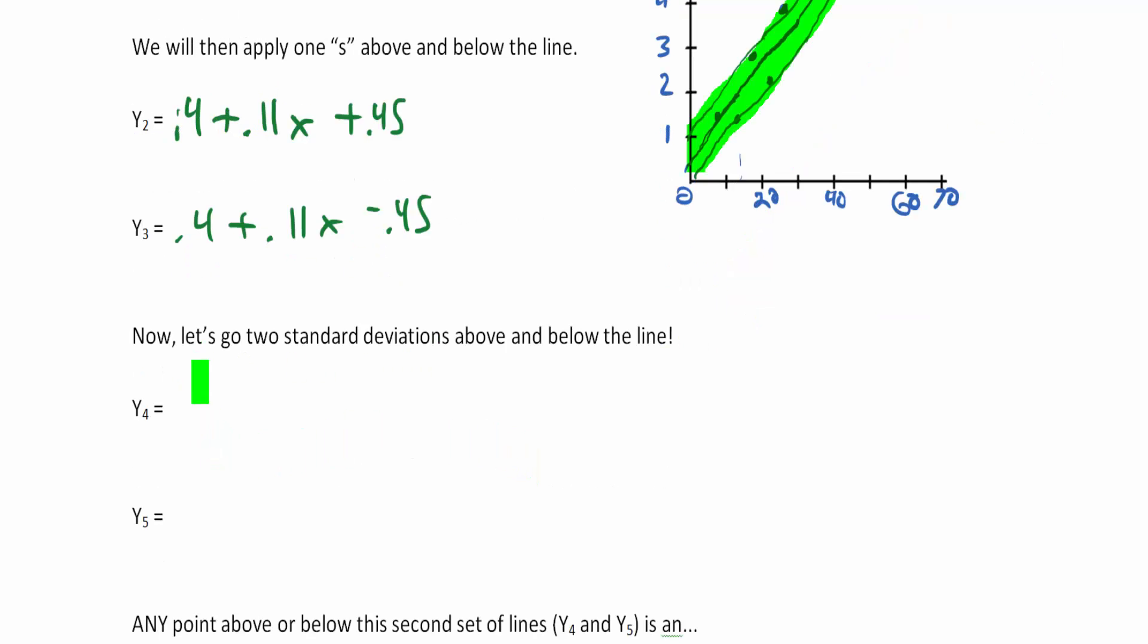Now we're going to go two standard deviations above and below the line. This is going to set up what 95% of the time we're going to see, but it's also going to set up our outlier zone. In y4 we're going to type in 0.4 plus 0.11x plus 0.45 times 2, and 0.4 plus 0.11x minus 0.45 times 2.